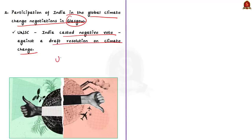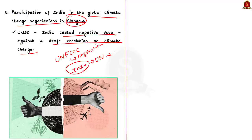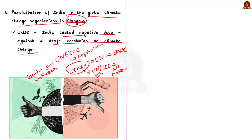The second example is India's participation in the global climate change negotiation in Glasgow. In the United Nations Security Council, India cast a negative vote against a draft resolution on climate change. At the same time, India actively participated in the global climate change negotiations in Glasgow to put forth its interest. In the UN, decisions are taken only by the members of the UNSC, but in the UNFCCC, the decisions are taken by all the participating nations unanimously. This makes the UNFCCC a better represented body, making India limit climate change negotiations only to UNFCCC and not bringing it to the UNSC. India is thus taking steps to position itself as a voice of the developing world, showing a significant transition in India's foreign policy.